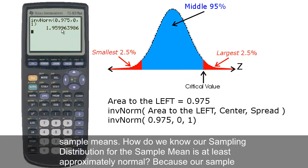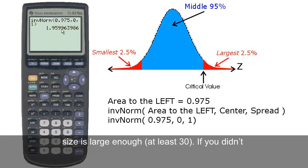How do we know our sampling distribution for the sample mean is at least approximately normal? Because our sample size is large enough, at least 30.